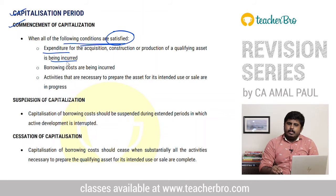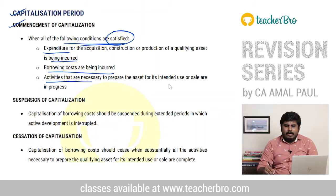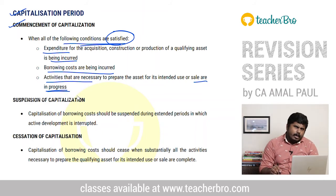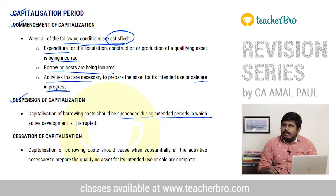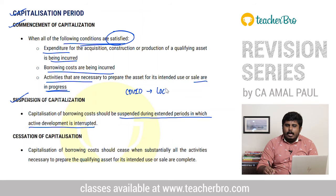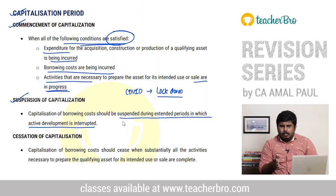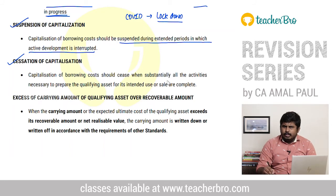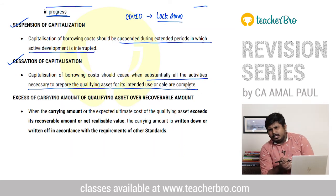The three cumulative conditions for commencement are: one — expenditure is incurred; two — borrowing cost is incurred; three — activities necessary to prepare the asset for its intended use or sale are in progress. Once all three are satisfied, capitalization starts. Capitalization should be suspended during extended periods in which active development is interrupted — for example, COVID-19 lockdown interrupting construction activity. Cessation occurs when substantially all activities necessary to prepare the qualifying asset for its intended use or sale are completed.